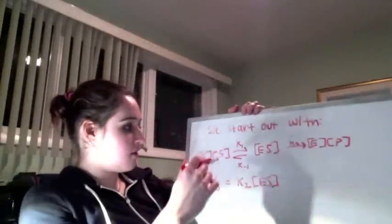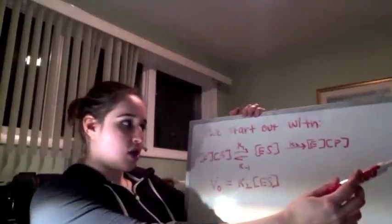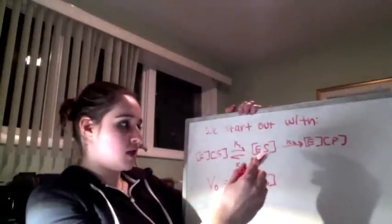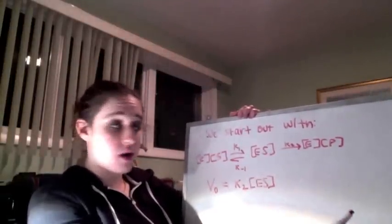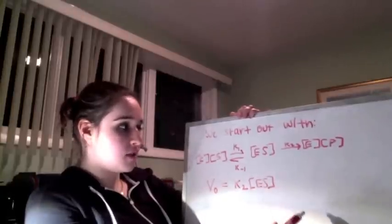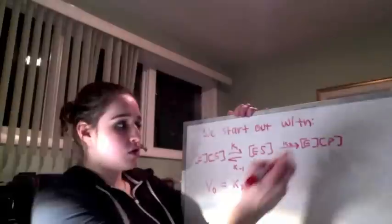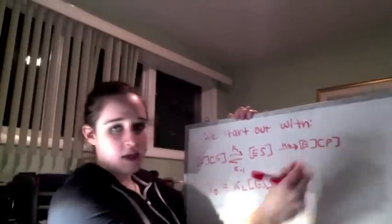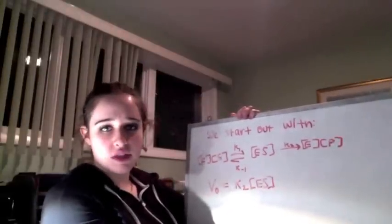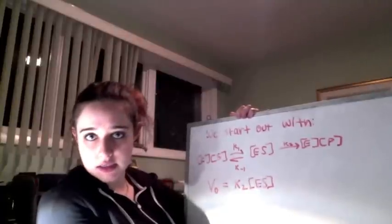So we start out with, here's our toolbox. We have the equation: enzyme plus substrate goes to enzyme-substrate complex, goes to products. And then we have the velocity based on this k2 right here. Now normally there's a k negative 2 right here, but because we're at t equals 0, we can ignore that, which is part of the steady-state assumption.